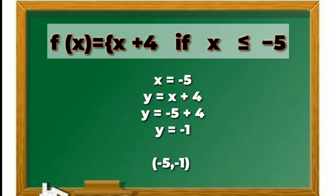Plus 4. We substitute x to negative 5. So our answer is y equals negative 1 because in the rules of integers, when we add negative to positive, we subtract it and copy the sign of the bigger number. So our ordered pair is negative 5 and negative 1.